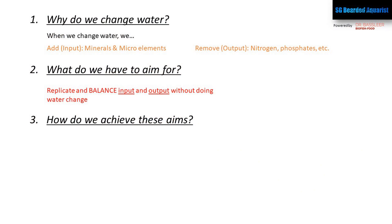When we change water, we're adding in fresh water, which contains certain minerals, elements, and micro elements that go back into the tank. To achieve a zero water change system, the two things we have to aim for are the addition of micro elements and the removal of macro elements like phosphate and potassium.